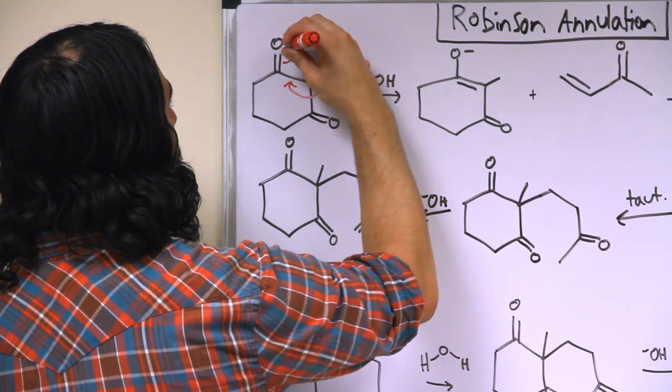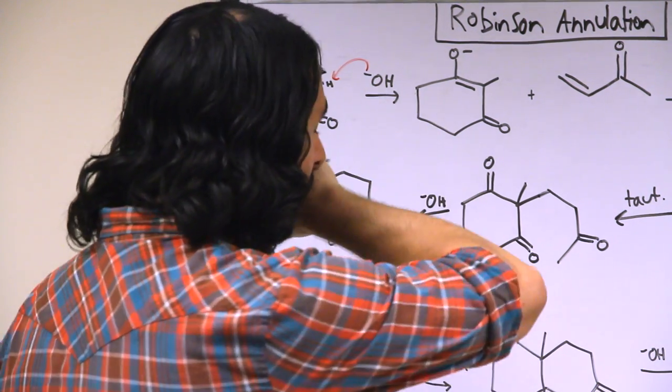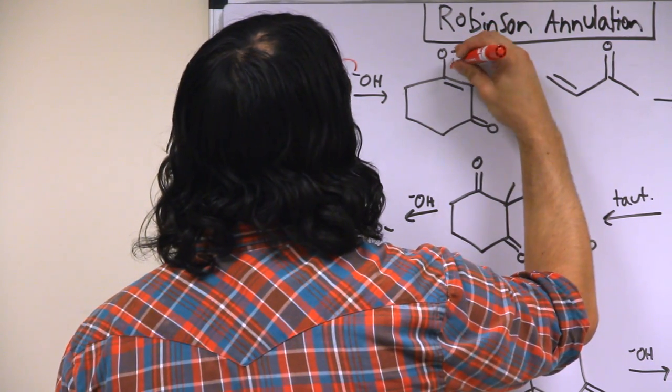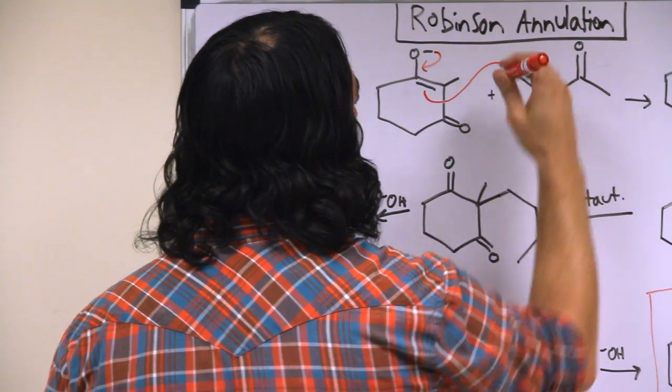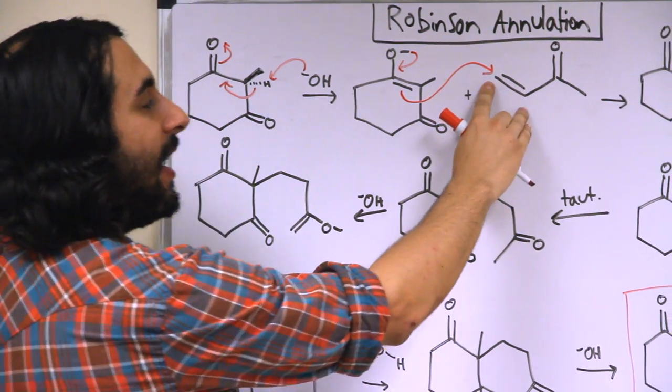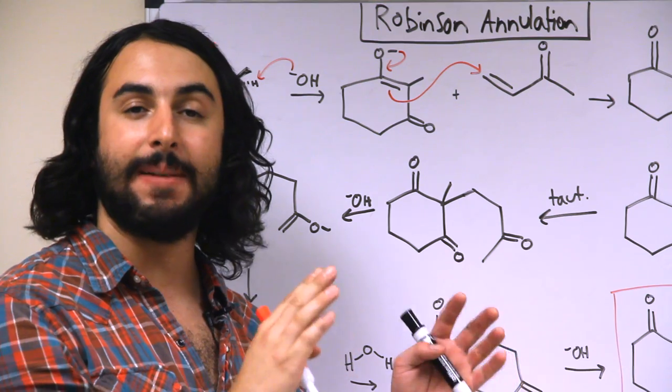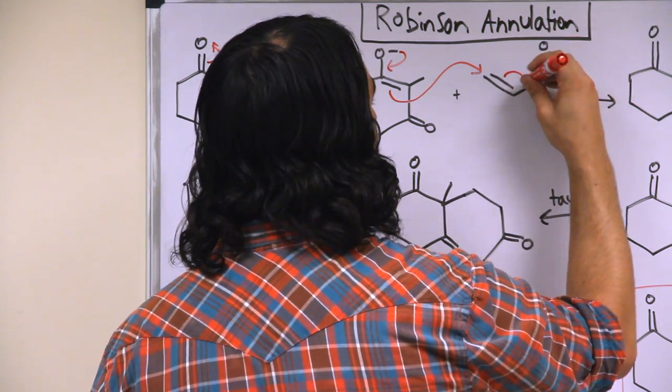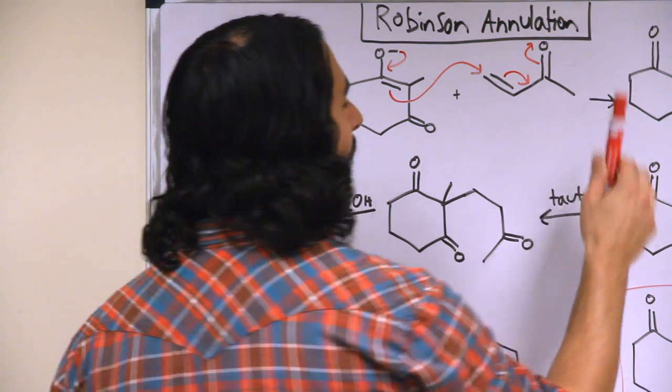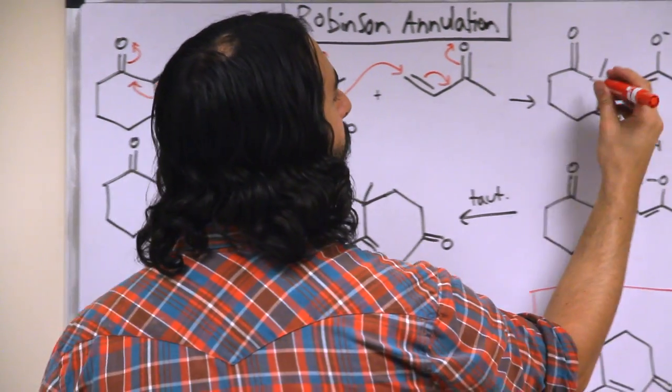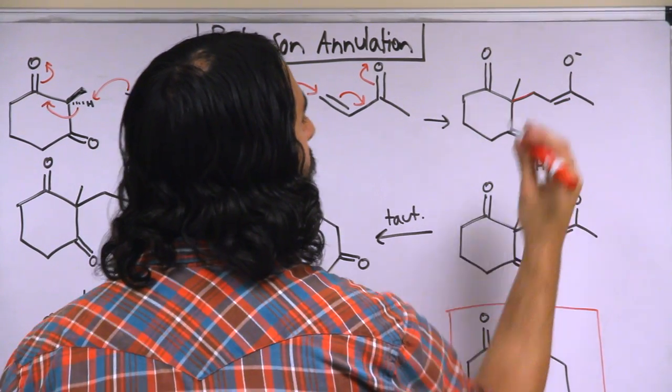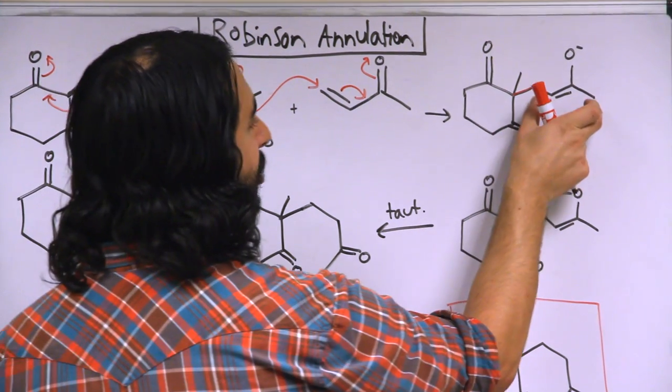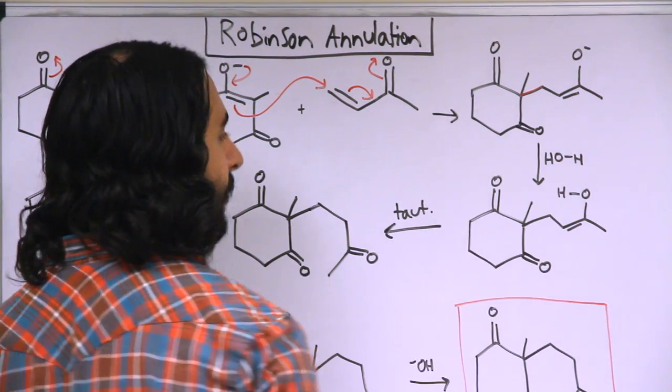So that's the one that we're going to deprotonate. We'll arbitrarily have that go up into this carbonyl here. So there is our enolate. Now the first thing this is going to do is it's going to attack this molecule here. This is the alpha-beta unsaturation that we remember from a substrate in any Michael addition. So the first step is a Michael addition. This pi bond goes here. And so there's the first attachment. We have formed this new carbon-carbon bond right there.